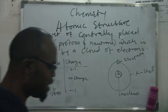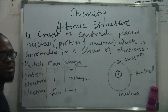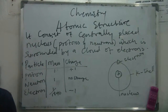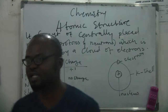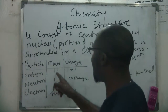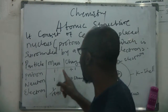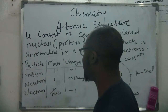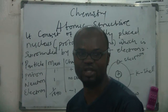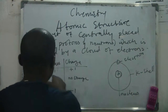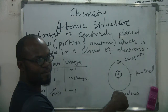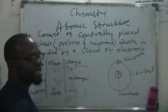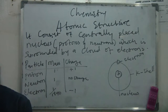Every single atom of any element must have these three things. Number one is protons. The proton has a mass of one and an electrical charge of plus one. The proton is found inside the nucleus, inside the nucleus at the center.